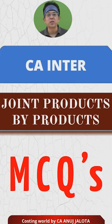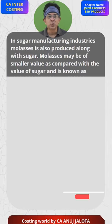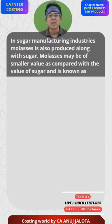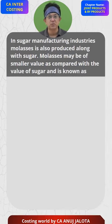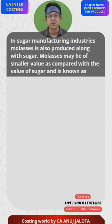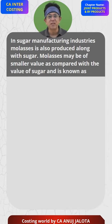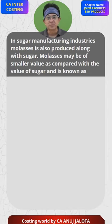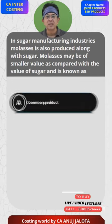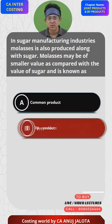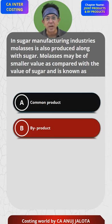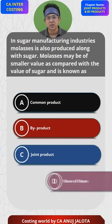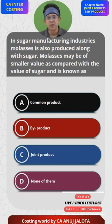Joint products and by-products MCQs. In sugar manufacturing industry, molasses is also produced with sugar. Molasses may be of smaller value as compared with the value of sugar and is known as — options: A) Common product, B) By-product, C) Joint product, D) None of the above.